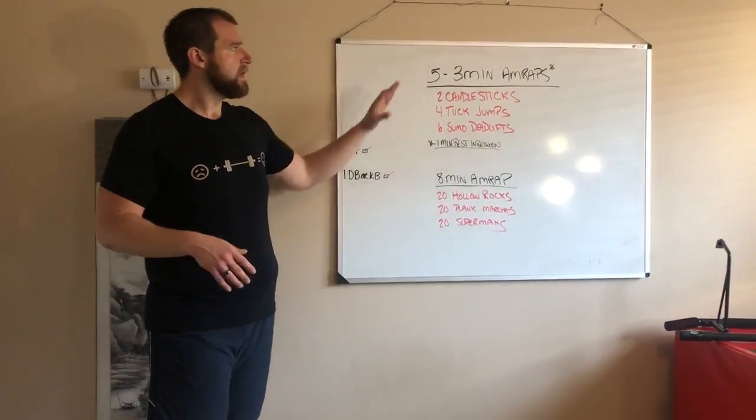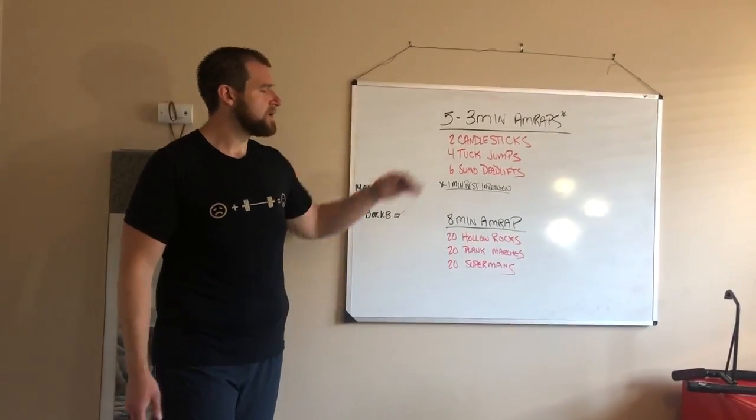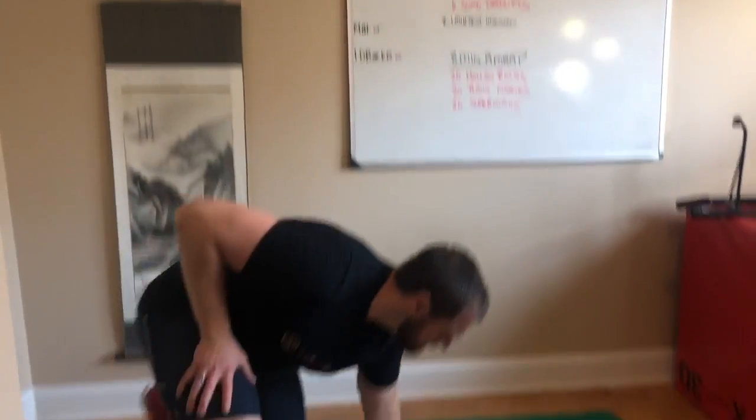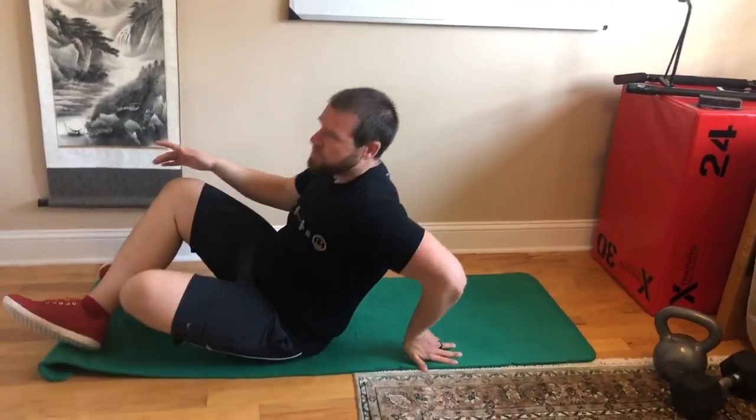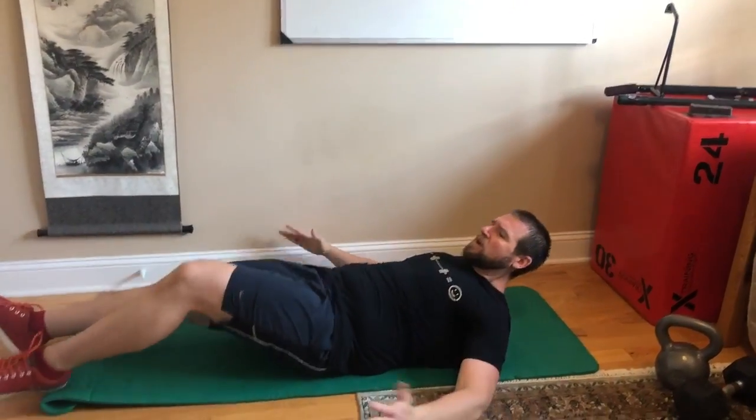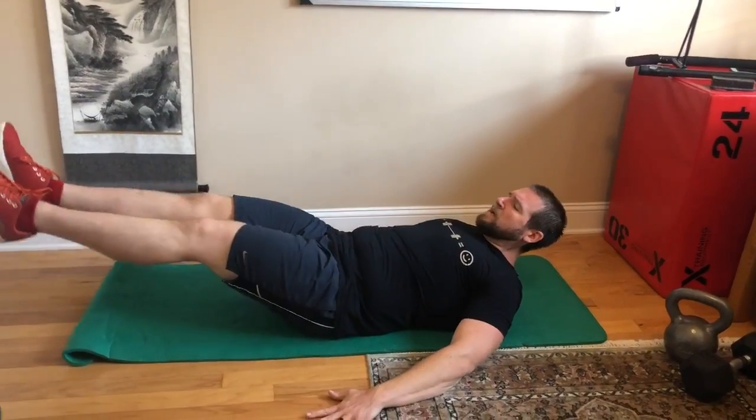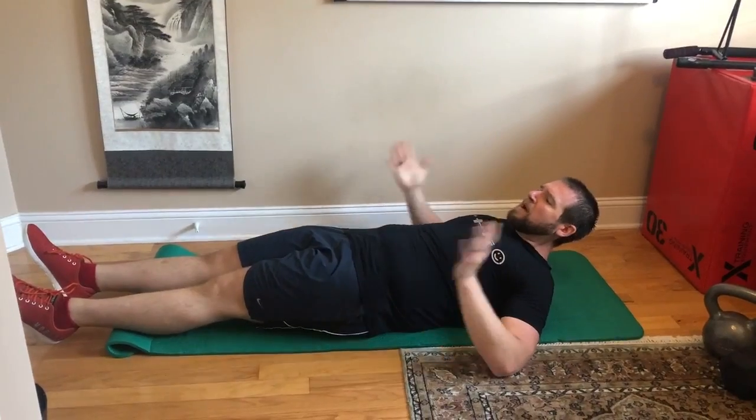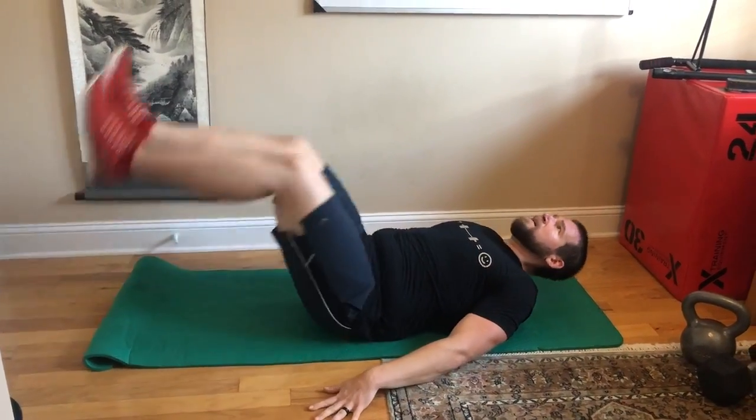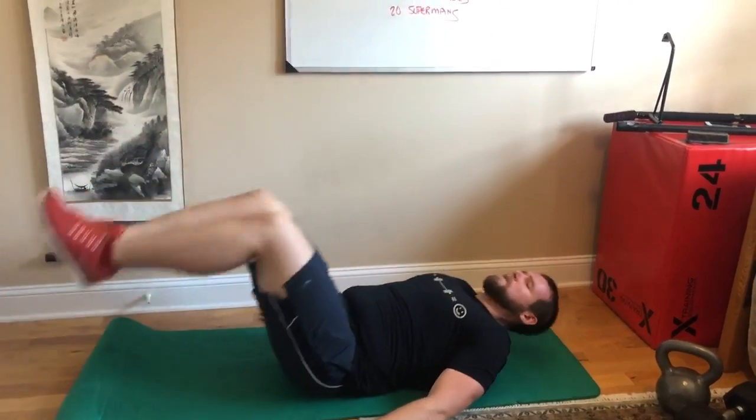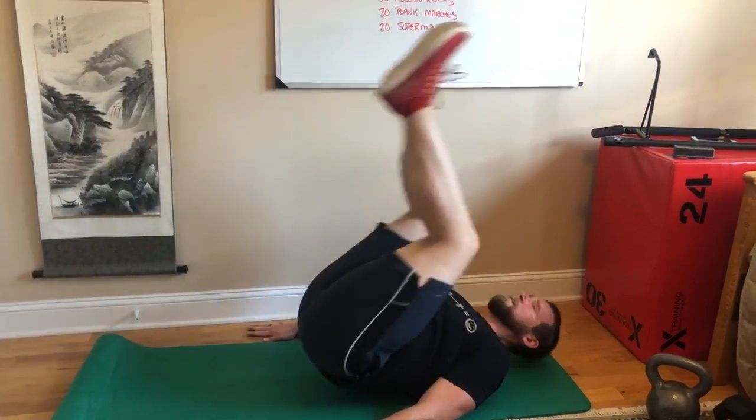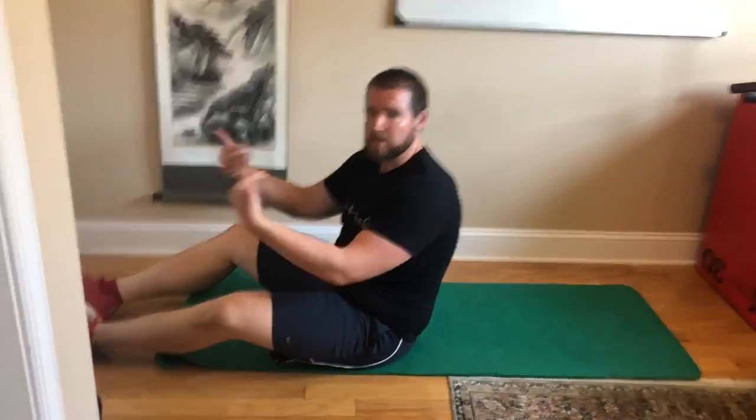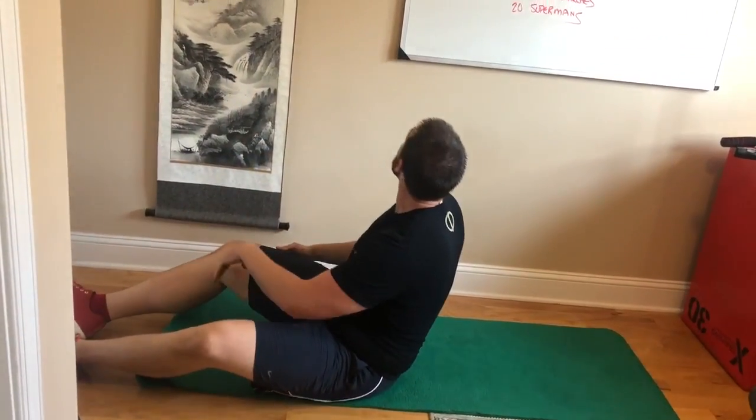To go over these workouts: two candlesticks. There's a couple different versions, you have your RX version and then an RX plus version. We're gonna start with our legs in a hollow, almost a hollow body position like so, arms down at our side, bringing our legs up onto our shoulders and back just like so. To add the RX plus you just continue that on to stand up.